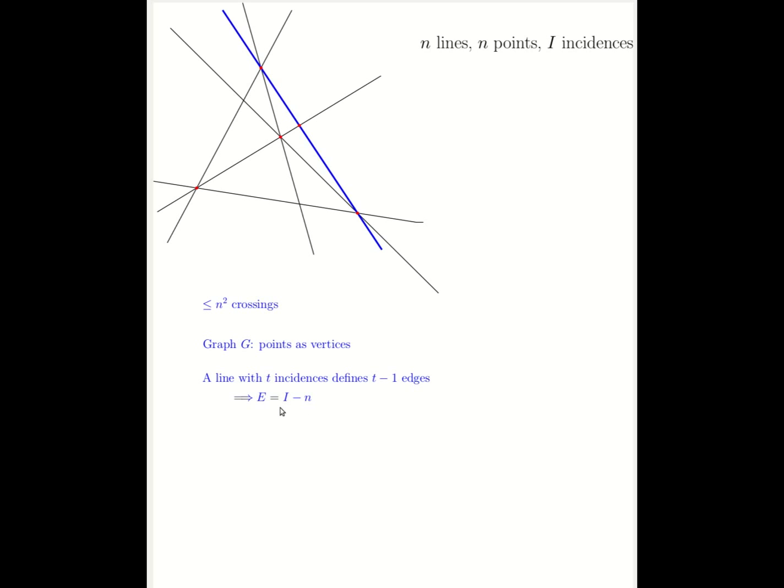And now it remains to recall the crossing lemma from a previous video. The crossing lemma says, in a graph with e edges and v vertices, there are at least this many crossings between its edges.